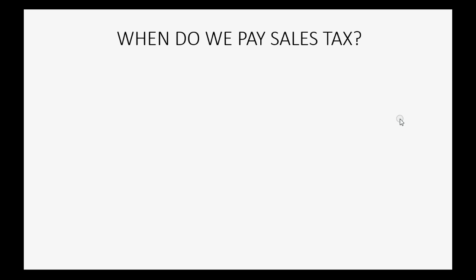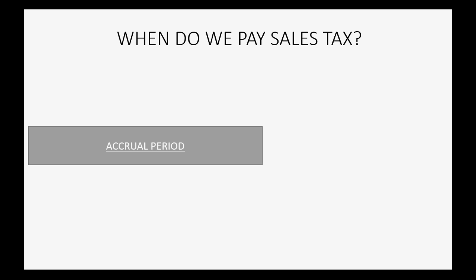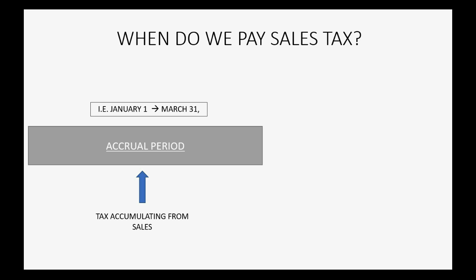When do we pay sales tax? The time period during which you make sales and accumulate sales tax is called the accrual period or the sales tax period — it's the time period that sales tax is accumulating for sales that you made. For example, a typical sales tax accrual period would be all the sales that you recorded from January 1 to March 31.